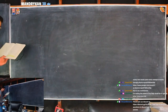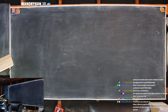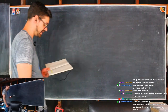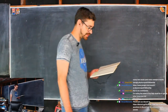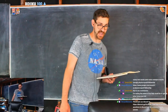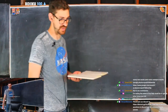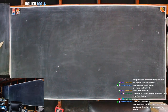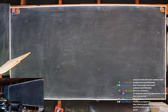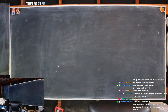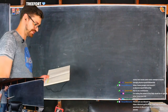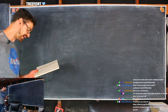Path integration part three. Last week we defined two things: the time ordering operator and the functional derivative. After defining these, we moved into a nice place called Fock space.